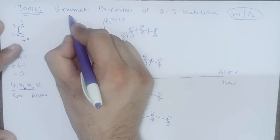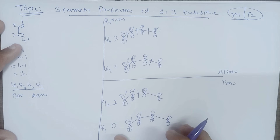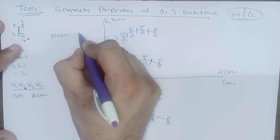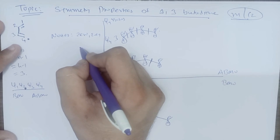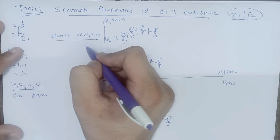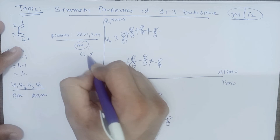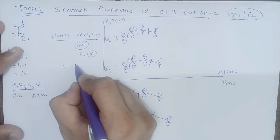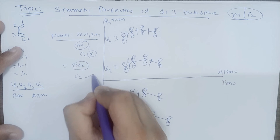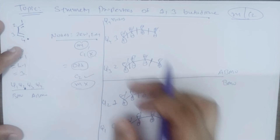Now why do we require to study the symmetry properties of 1,3-butadiene? This is the molecular orbital diagram for 1,3-butadiene. When we are having 0 nodes or an even number of nodes, that type of orbital will always have a mirror plane and does not have a C2 axis. If we are having an odd number of nodes, it will always have a C2 axis and will not have a mirror plane.